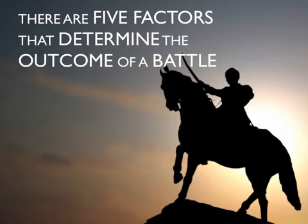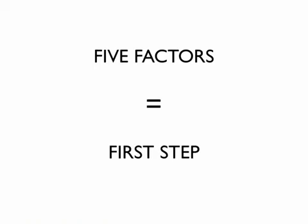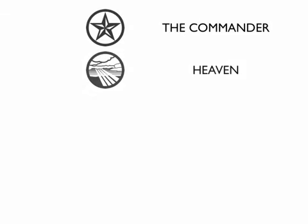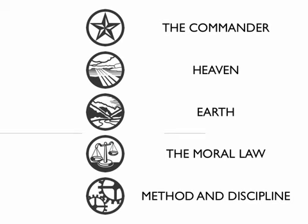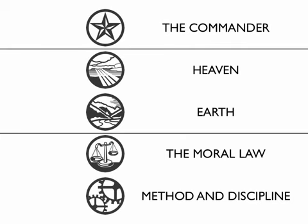Key concept one: there are five factors that determine the outcome of a battle. Understanding the five factors is the first step to truly understanding the Art of War. The five factors are the commander, heaven, earth, the moral law, and method and discipline. An important way to look at these points is to break them into three groups.